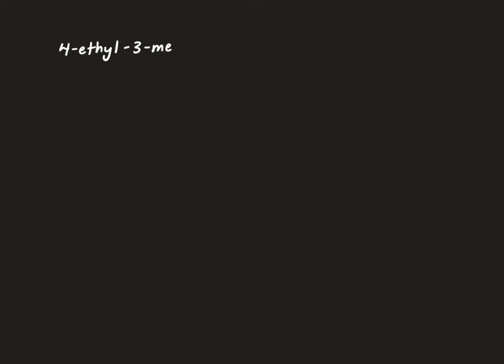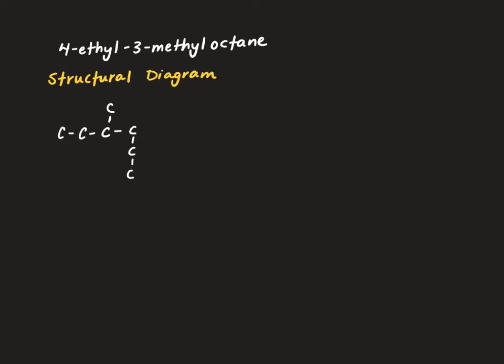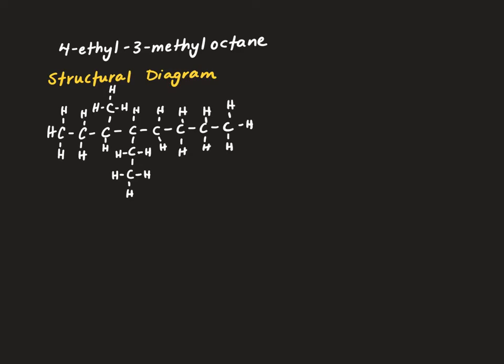We're going to look at another example, this time one with branches, so we can see the two different ways we can represent branch structures in a condensed structural diagram. I'm going to start by drawing out our structural diagram using the same molecule as last time: 4-ethyl-3-methyl-octane. As we can tell from our structural diagram, this is pretty messy and hard to read.